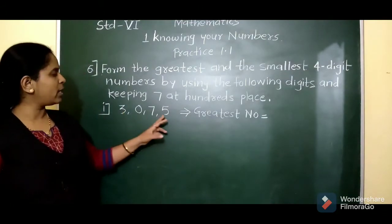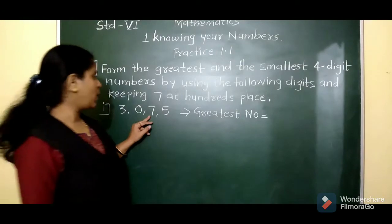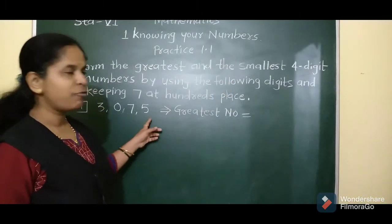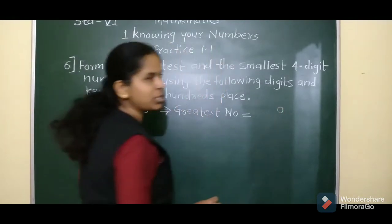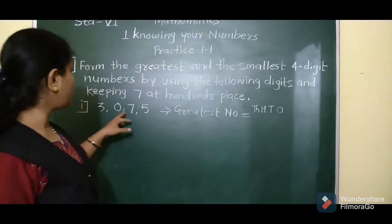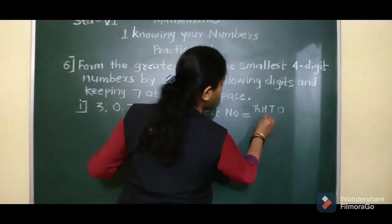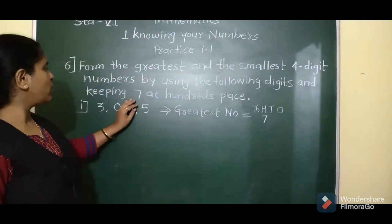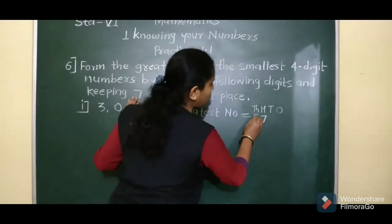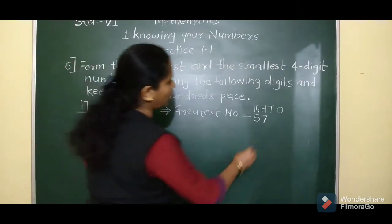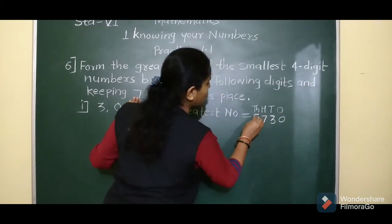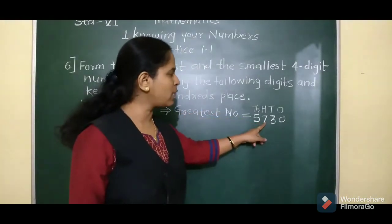For the greatest number, we arrange digits in descending order, but 7 must stay at the hundreds place. The places for a 4-digit number are: ones, tens, hundreds, and thousands. We fix 7 at the hundreds place. Remaining digits are 3, 0, and 5. The greatest among them is 5, which goes at the thousands place. Then 3 comes next, and the smallest digit 0 goes at the ones place. So the greatest number formed is 5,730.